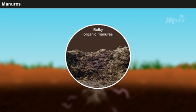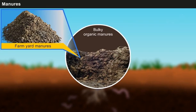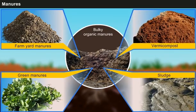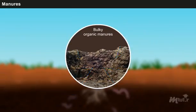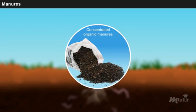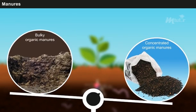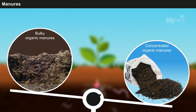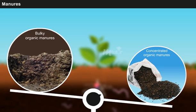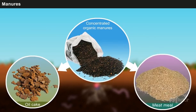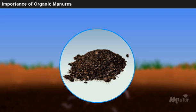Bulky organic manures contain minimal amounts of nutrients and hence are required in larger quantities. Some examples are farmyard manures, green manures, vermicompost and sludge. Concentrated organic manures have high amounts of plant nutrients compared to the bulky organic manures, so the requirement is very minimal. Some examples are oil cake, meat meal, etc.